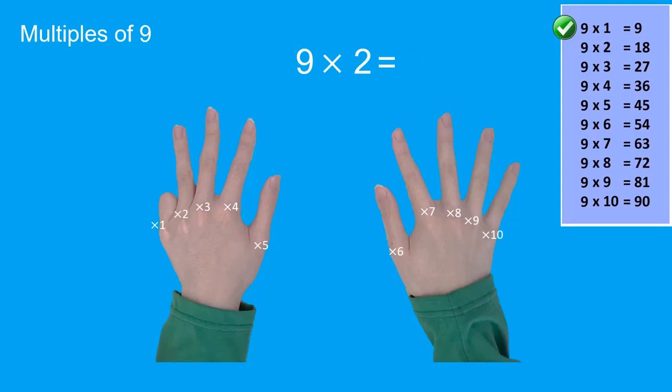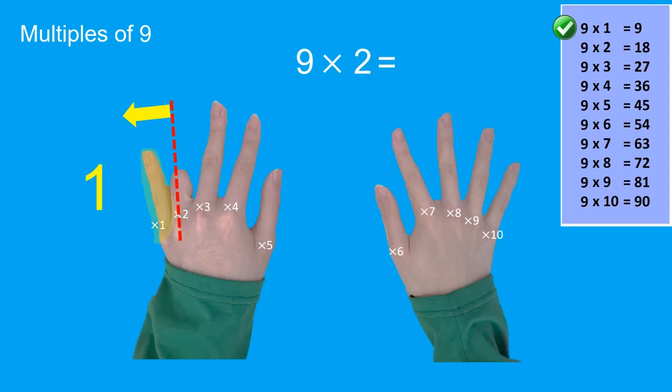Next we have nine times two. So we close the times two finger. Your close finger makes this big gap. On this side, it shows one finger only. On the other side, it shows eight fingers. When you put one and eight together, you get eighteen. Ta-da!